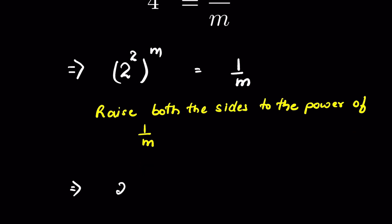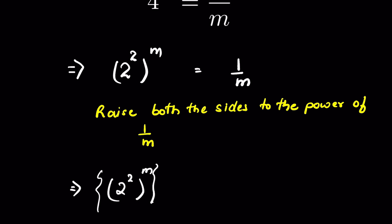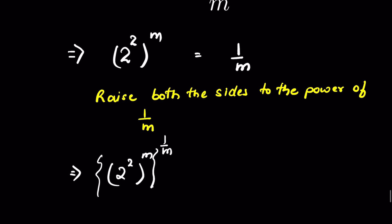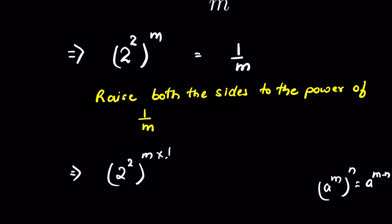This gives us 2 raised to the power 2, whole raised to the power m times 1 upon m. We know that when a raised to the power m, whole raised to the power n, this equals a raised to the power m times n. So the exponent becomes m times 1 upon m, and the right side is 1 upon m, raised to the power of 1 upon m.